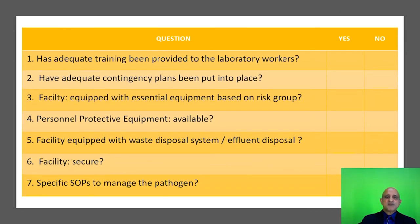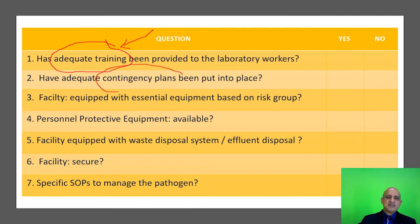We then move on to some of the questions which you must pose to your laboratory workers or your principal investigators. The first question pertains to training: has adequate training been provided to the laboratory workers? If not, additional training must be provided. Contingency plans must be put into place in the event of a spill or a breach of containment. The SOPs must be developed.